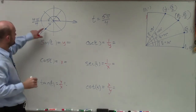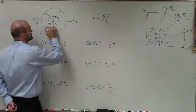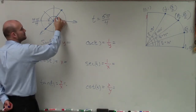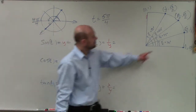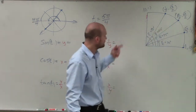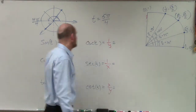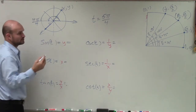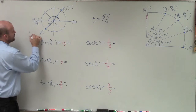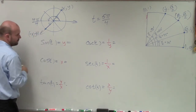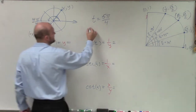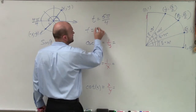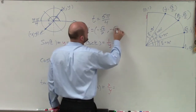Now I need to determine what this coordinate point is. You can see that this point is the exact reflection of the point up here, which is only pi over 4 away from our initial side. So it's the exact same point, but now reflected into the third quadrant. If pi over 4 gives us (√2/2, √2/2), then this coordinate is negative x, negative y. So the point is negative √2/2, negative √2/2.